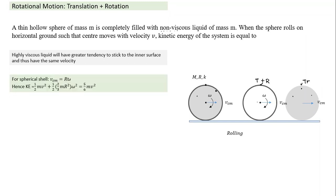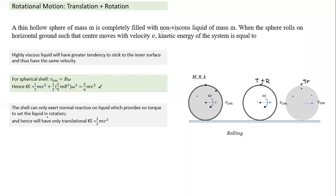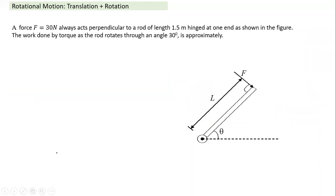So for the rolling hollow sphere: the shell has kinetic energy equal to one-half mv squared plus one-half I omega squared (translational plus rotational, with v_cm equals R omega), giving (5/6)mv squared for a spherical shell. The liquid inside has only translational kinetic energy, one-half mv squared, since it does not rotate. The total kinetic energy of the system is the sum of both.